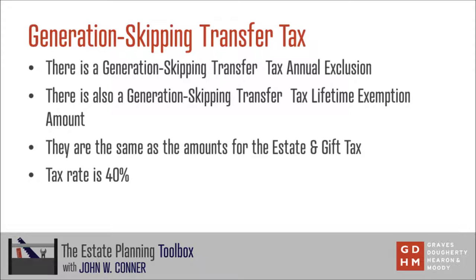If you do make a taxable generation-skipping transfer and have used up all your lifetime exemption amount as it applies to the GST tax, the tax rate for generation-skipping transfers is a flat 40%, unlike the estate and gift tax which is a marginal 40% tax rate. So if you end up making a generation-skipping transfer over and above the lifetime exemption amount, it will be taxed at a flat 40% rate.